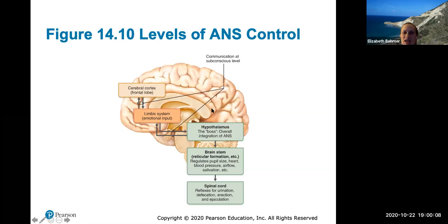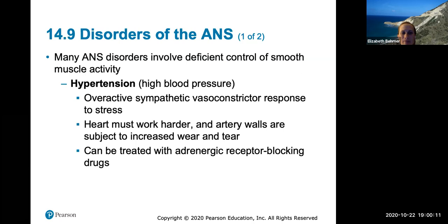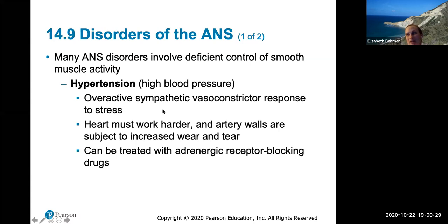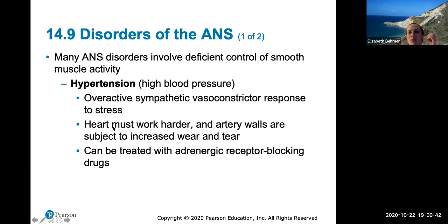A disorder like hypertension can be due to an overactive sympathetic vasoconstrictor response to stress. Constantly activating the sympathetic division causes overactive vasoconstriction, which is why stress leads to hypertension and high blood pressure. This makes the heart work harder and subjects artery walls to increased wear and tear. It can be treated with adrenergic receptor blocking drugs such as beta blockers.